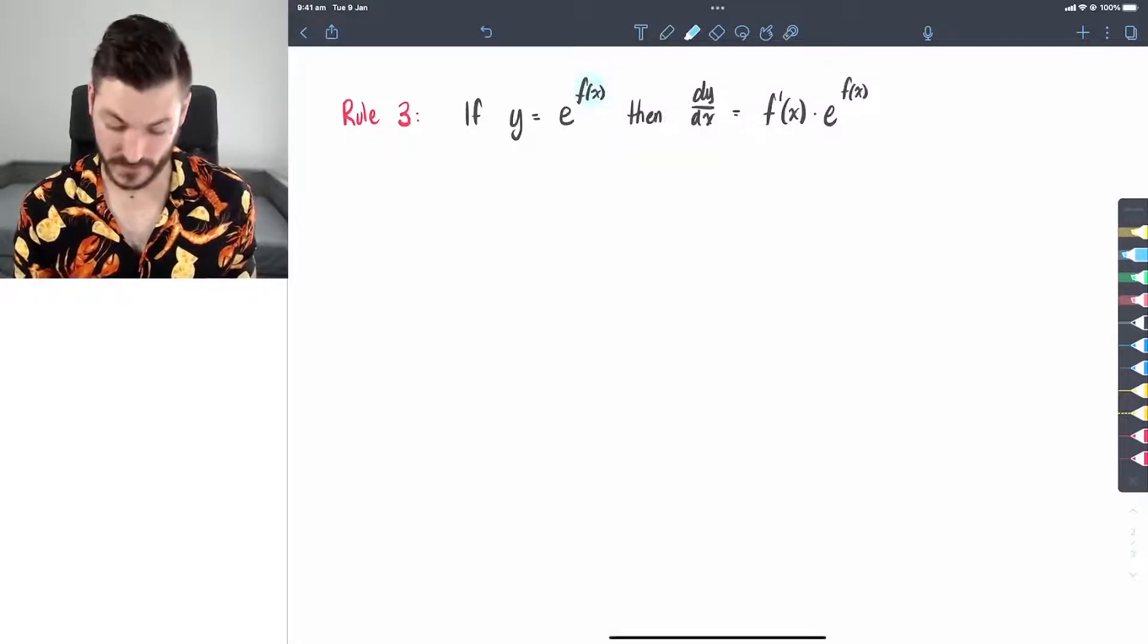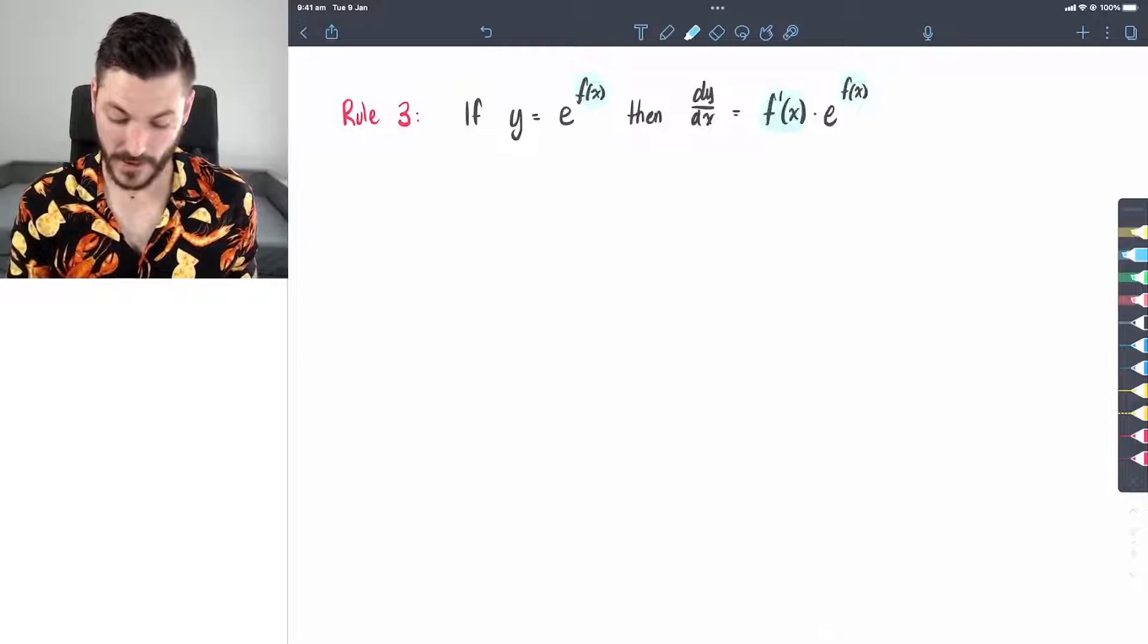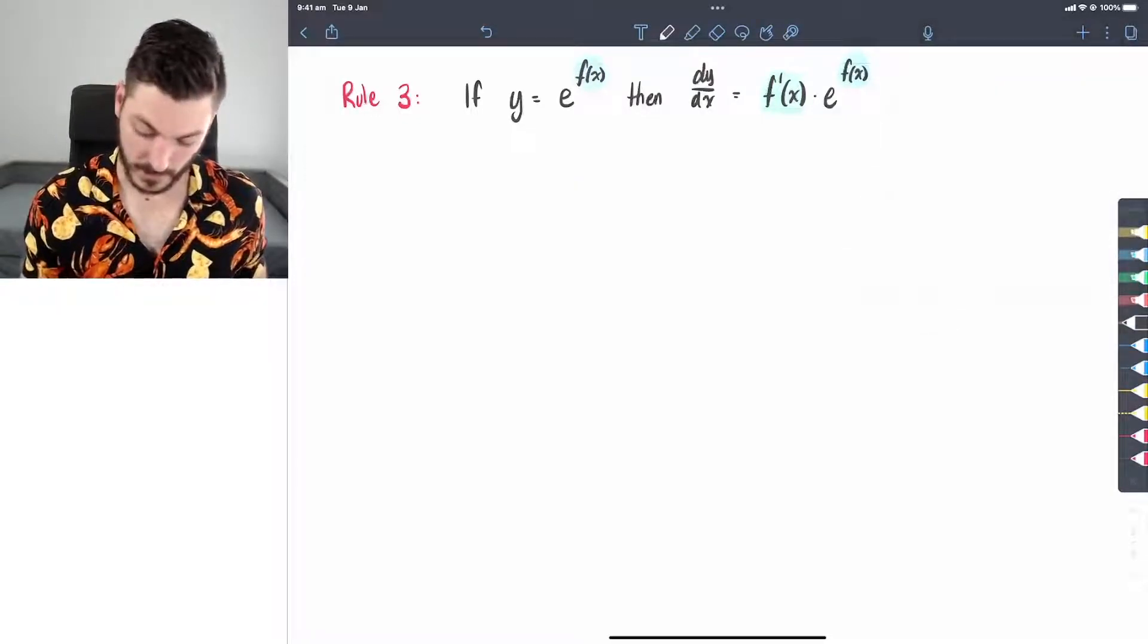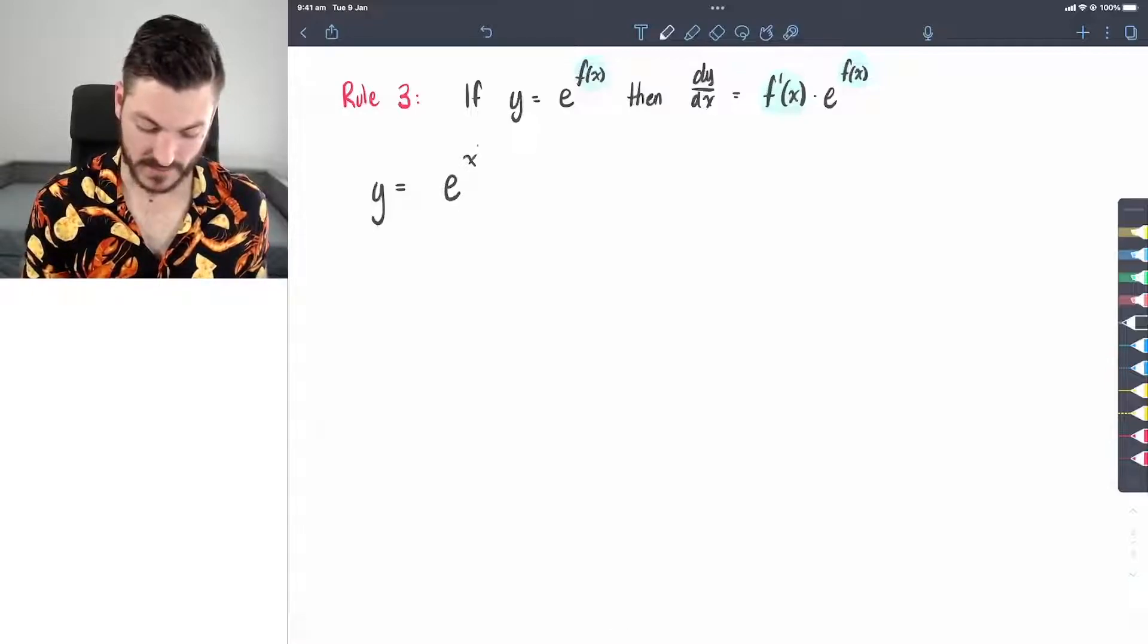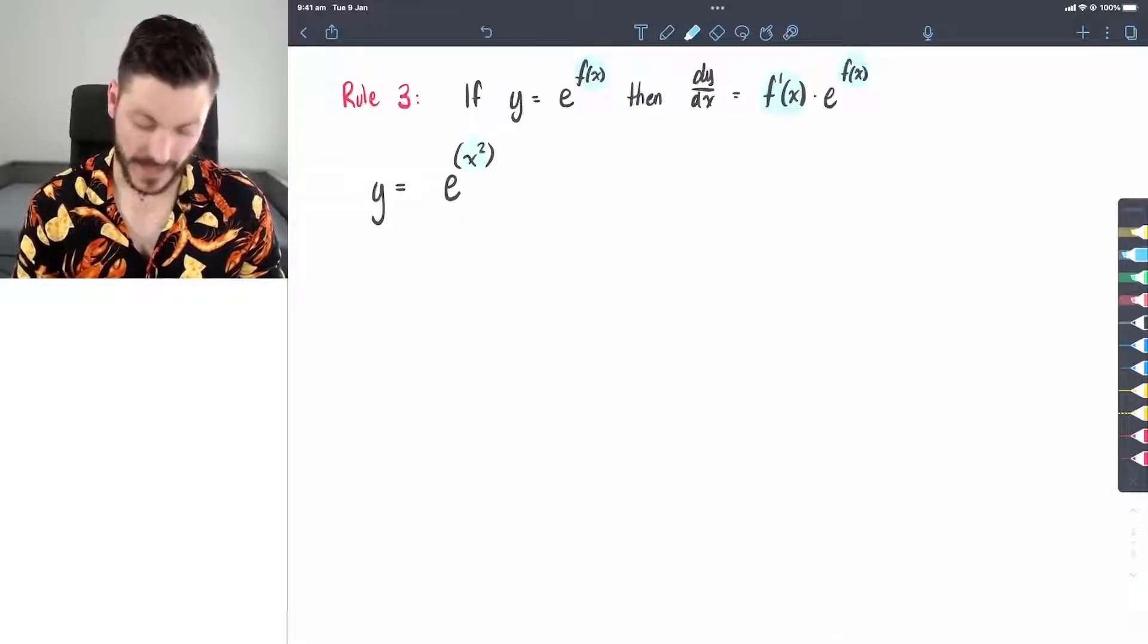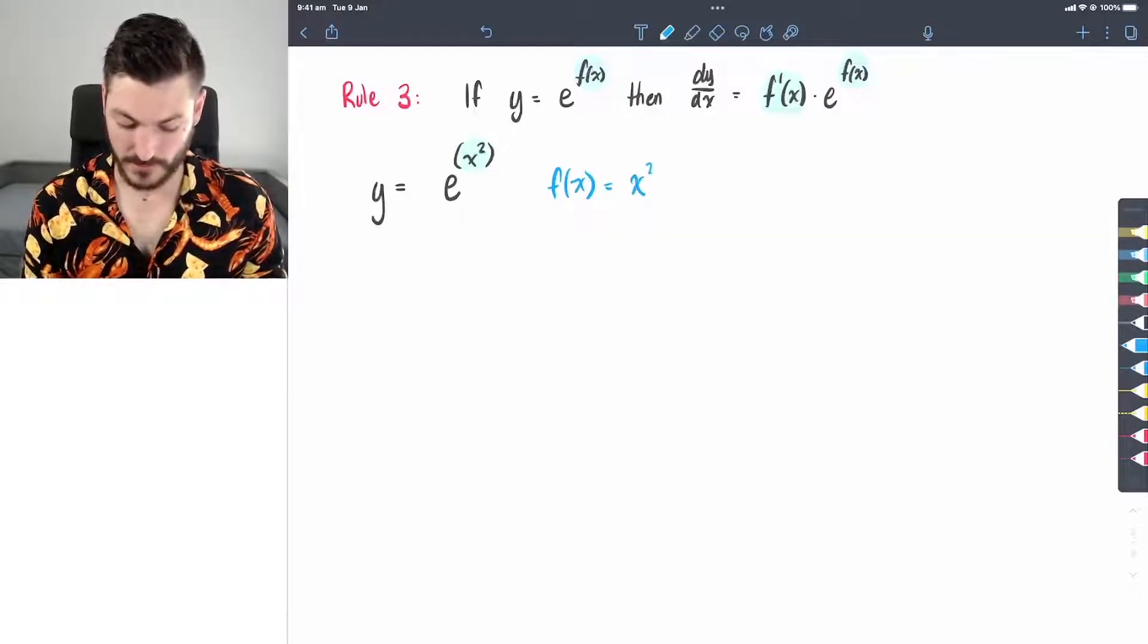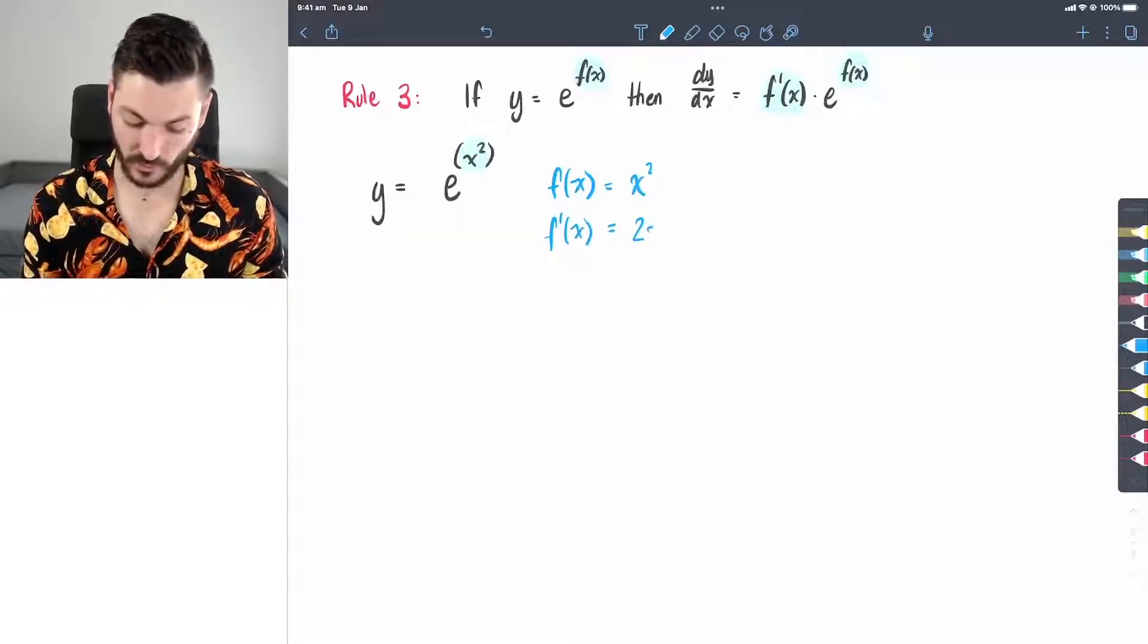So this blue function f of x, we're going to find the derivative of it and then multiply it by the original. So I've actually deleted my questions I had here. Let's just make a couple up. Let's say if y equals e to the power of x squared, we'll start with a simple function of x. That means that x squared is my f of x. So I'm going to write f of x equals x squared. And the derivative of that, f dash x equals 2x.